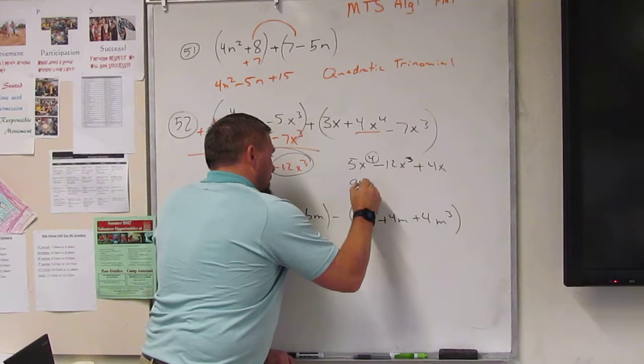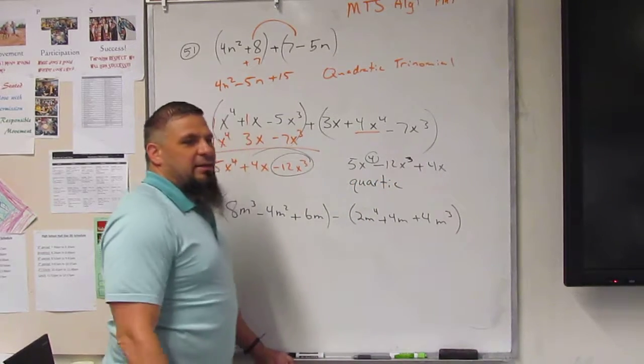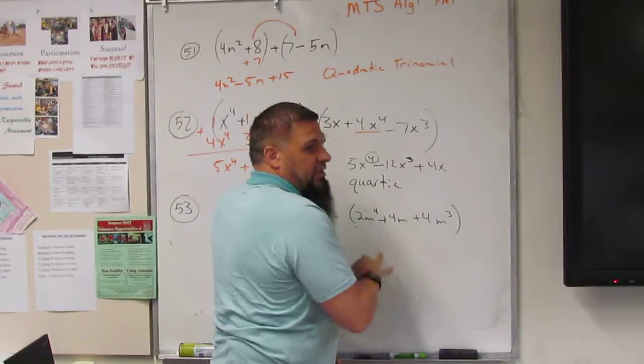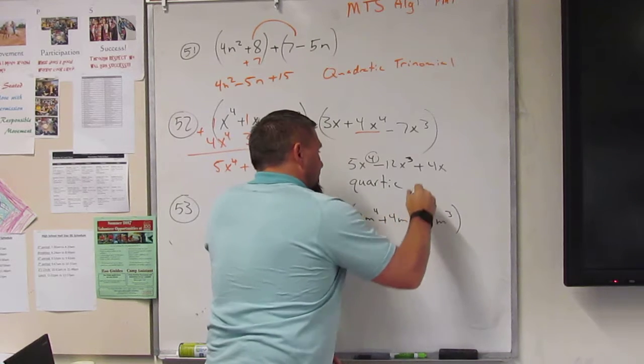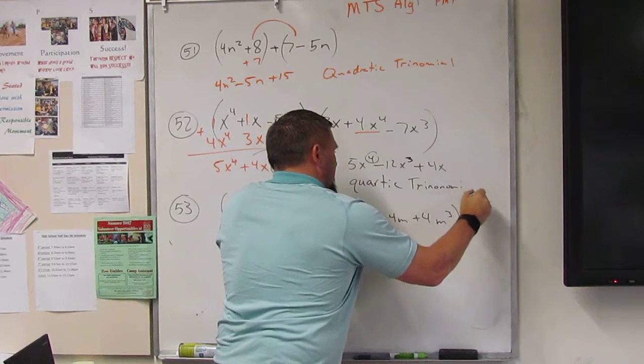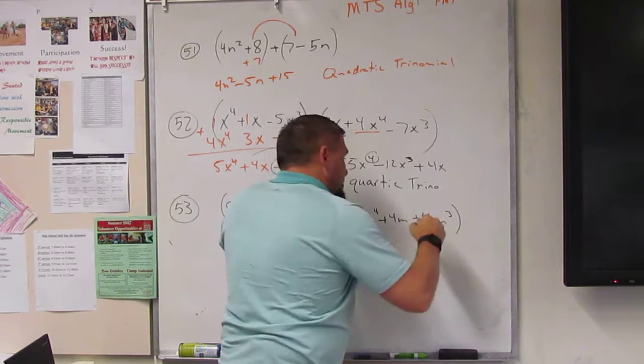4th degree. Quartic. How many pieces? 1, 2, 3? What do we call that? Trinomial. Oops, not a trinonomial. Trinomial. Alright.